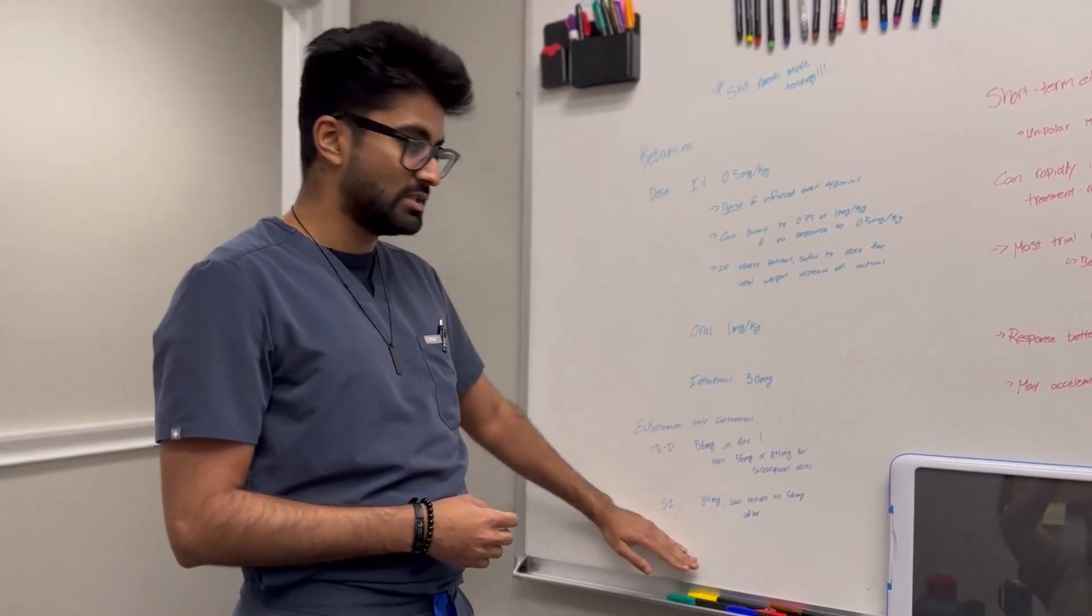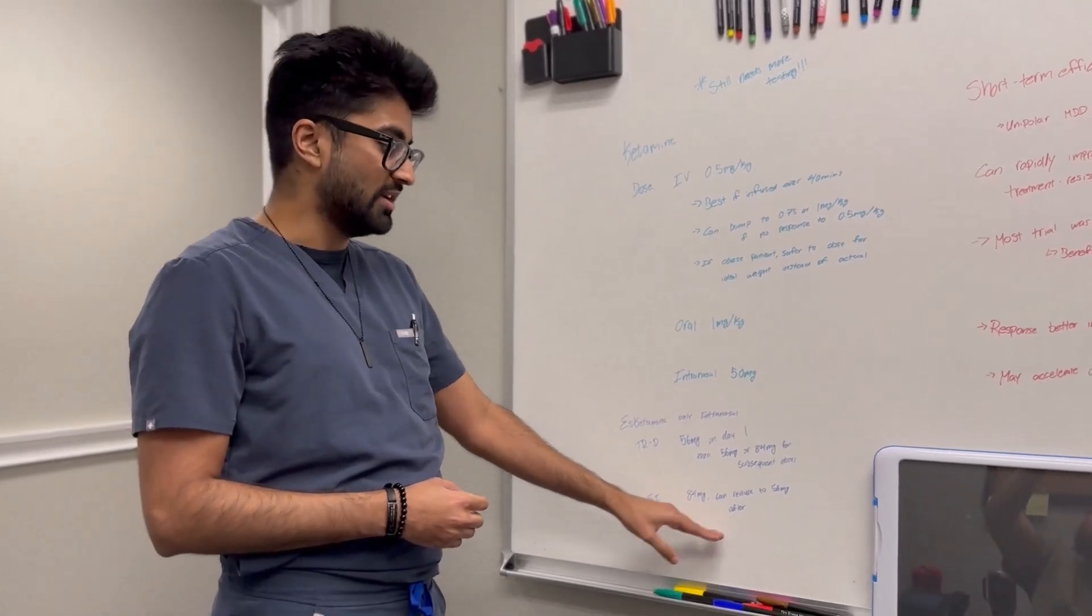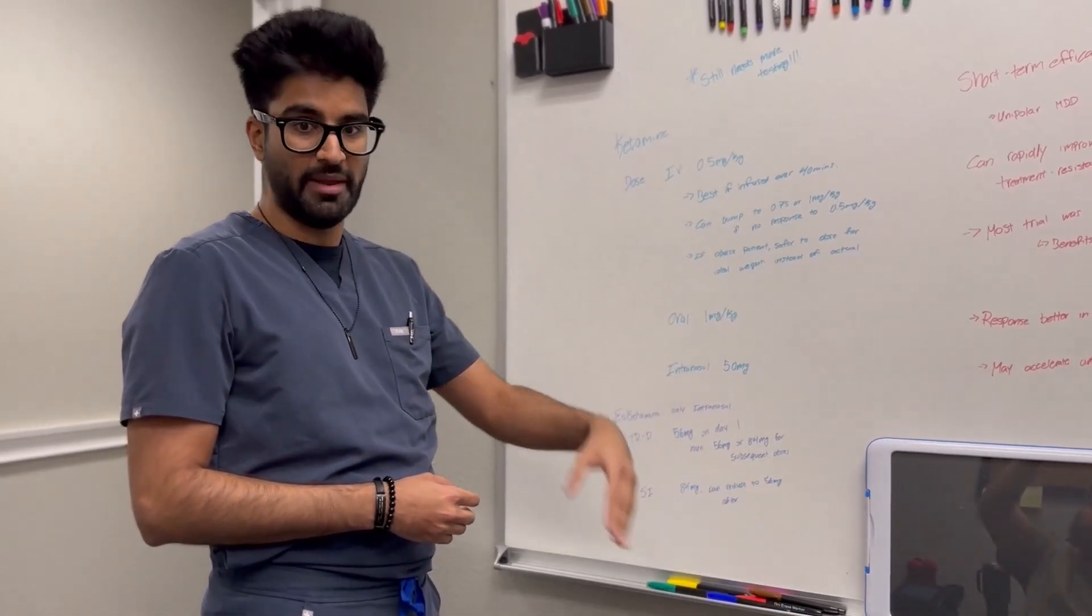If you want to do it for suicidal ideation, then they typically start with 84. And then you can give them 56 if they're tolerating the medication well.